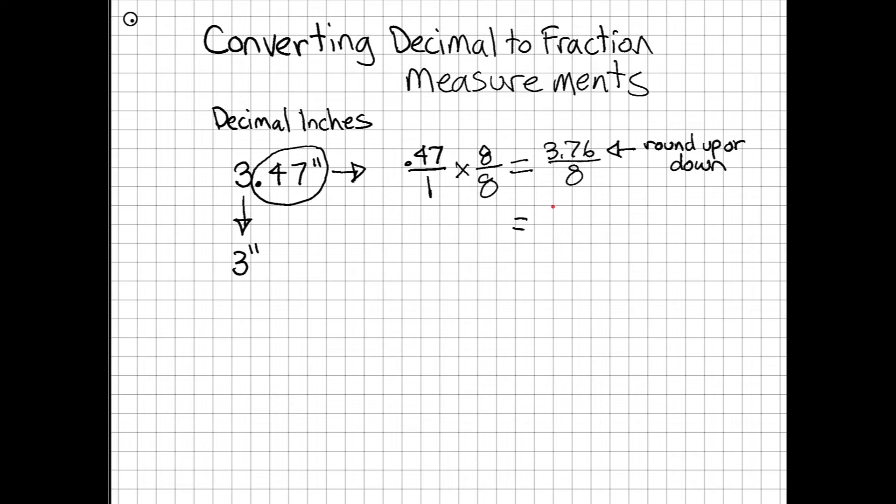In this case, 3.76 would round up to 4 over 8, and I can take that fraction and reduce it down so that I would have 1/2 of an inch. I'm going to take that 1/2 inch over and add it to my 3 inches that I had before. So in the end, I'm going to have 3 1/2 inches.